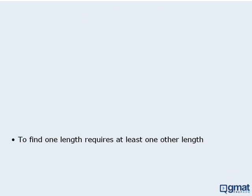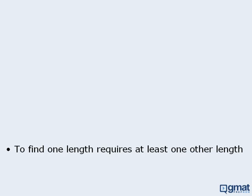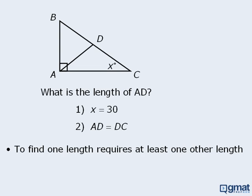The next tip is: to find one length, we must be given at least one other length. If a data sufficiency question asks us to determine a length or an angle, it is often the case that a statement will be sufficient if it locks the shape into having one particular angle or length. In other words, a statement will be sufficient if it forces the shape into having just one angle or length.